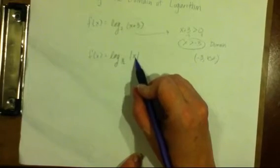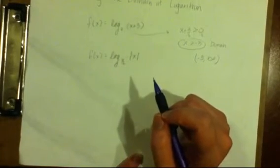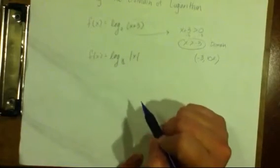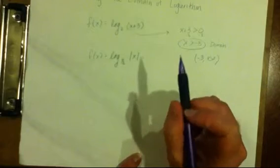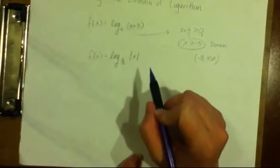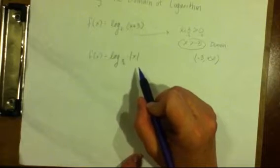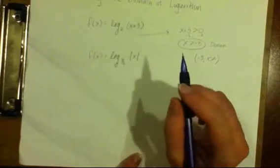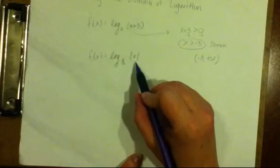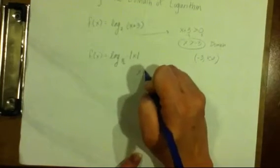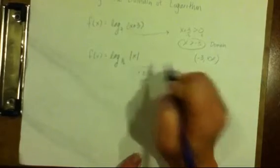So in this case, it doesn't matter if we plug in a negative or a positive, because regardless, we will end up with a positive that we're plugging into the logarithm, which is great. There is only one number, then, that won't work, and that is you cannot plug in 0 into a logarithm. So the absolute value of 0 is still just 0. So in this case, x simply cannot equal 0, and that's the domain.